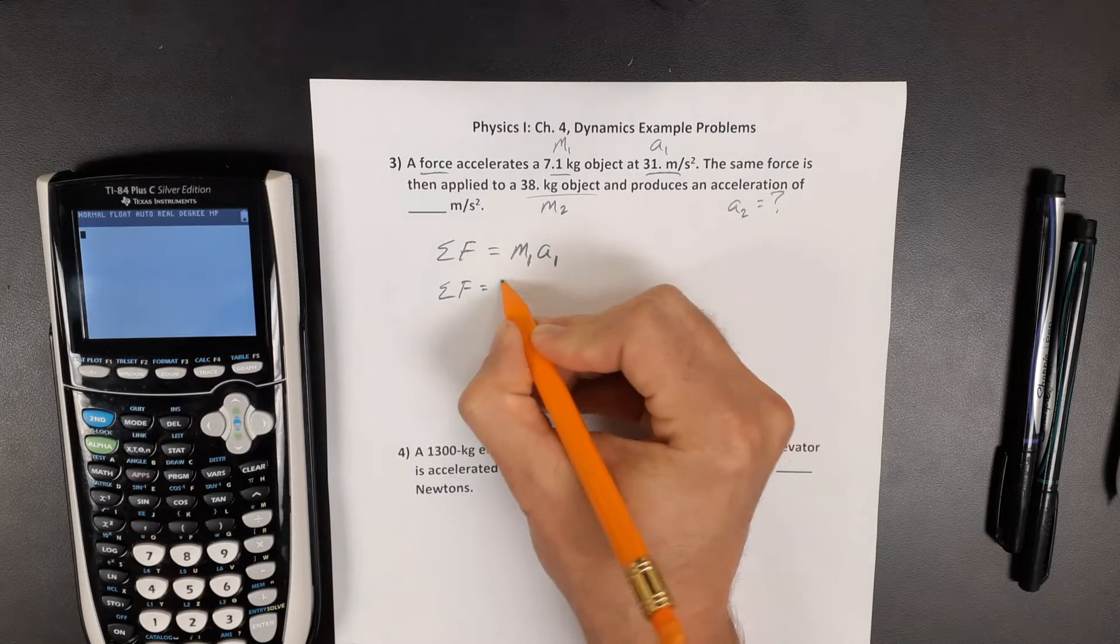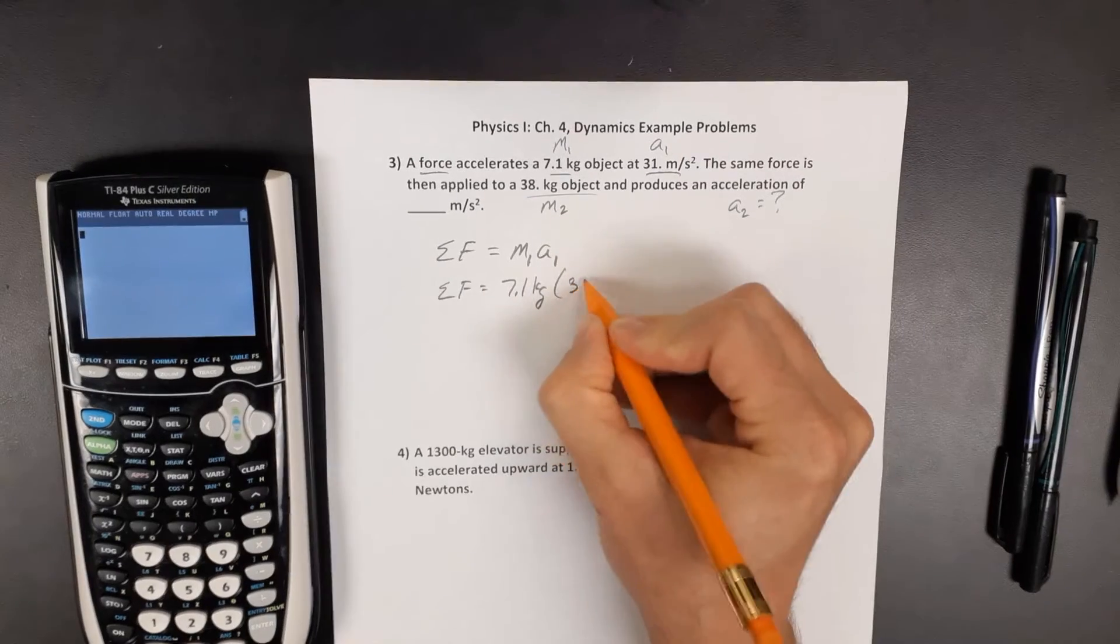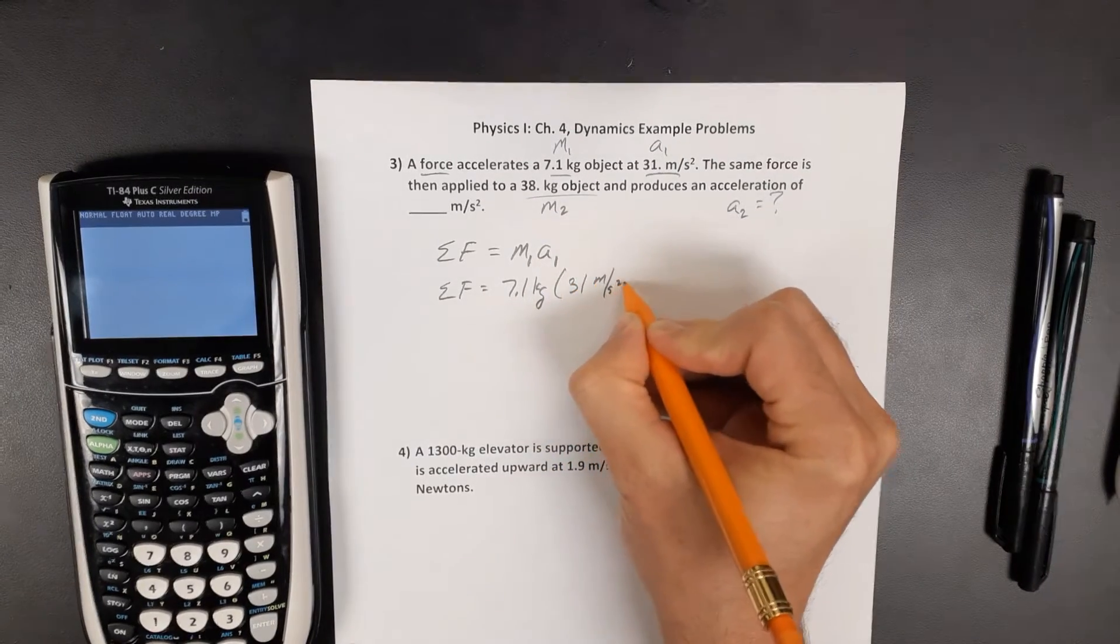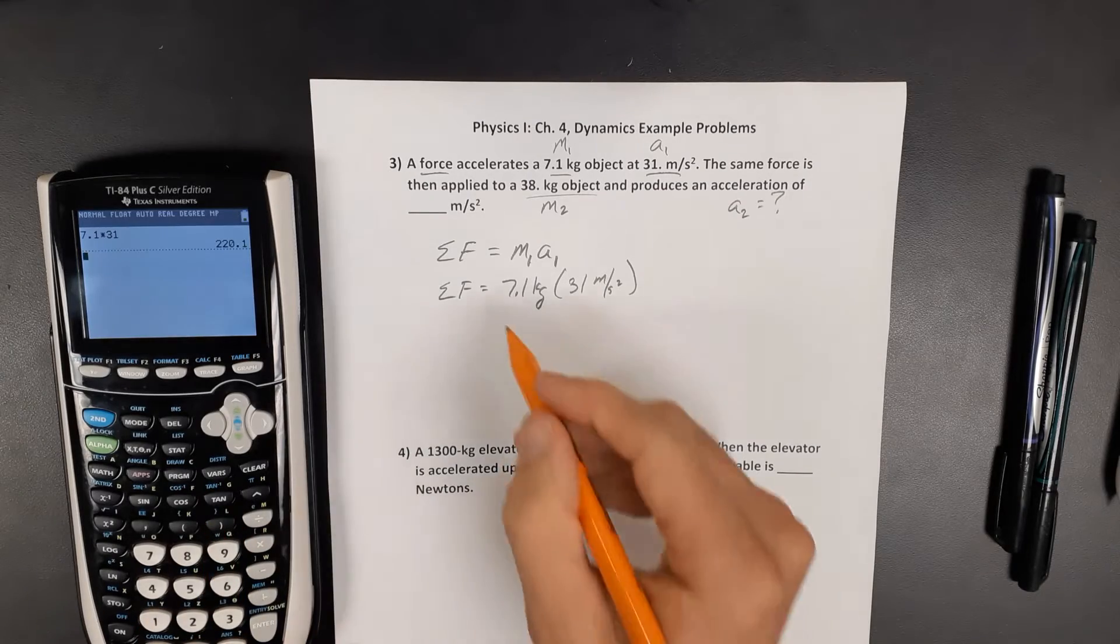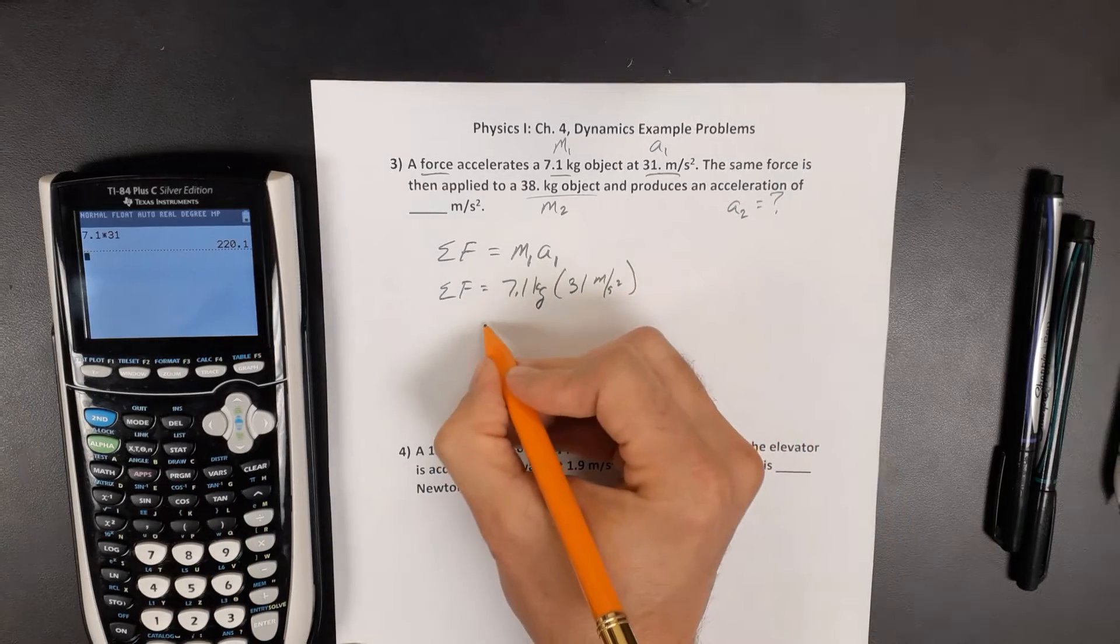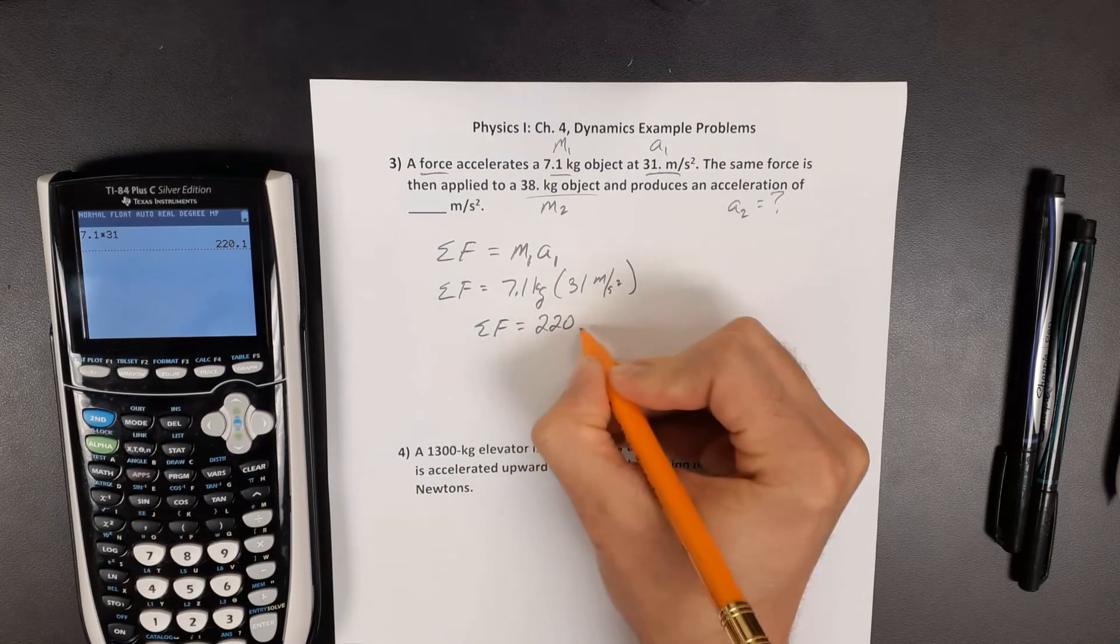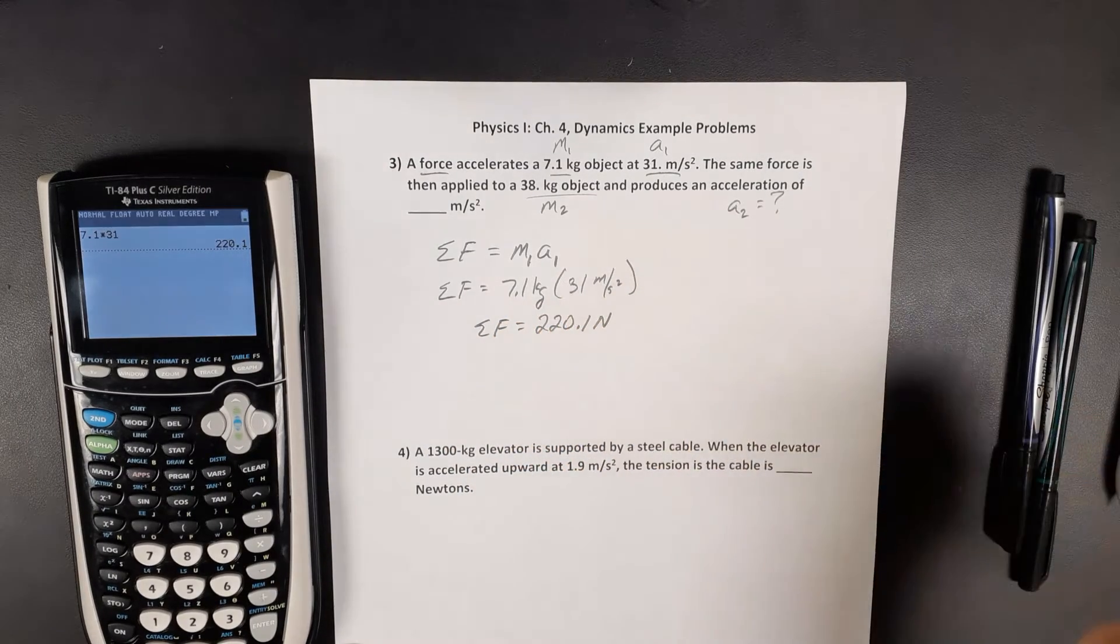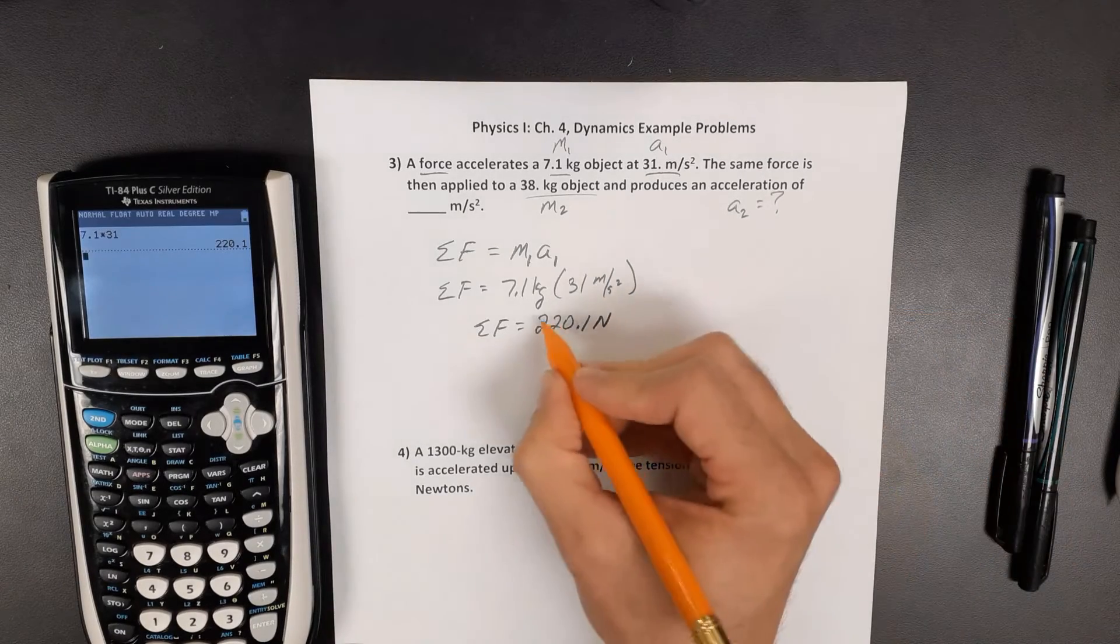So if I take object 1 as 7.1 kilograms with an acceleration of 31 meters per second squared, so 7.1 times 31, I get a net force of 220.1 newtons. We could just round that to 220 if we wanted.